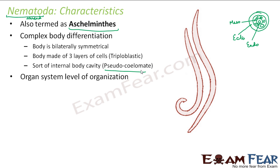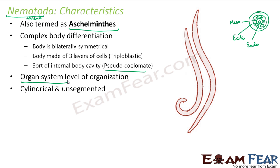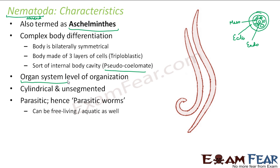The level of organization is organ system level, because here you have distinct organ systems — distinct digestive, respiratory, and excretory systems. They are cylindrical and unsegmented, so there is no segmentation seen on these worms. You would have seen these thin thread-like worms in day-to-day life with no segmentation on their bodies.